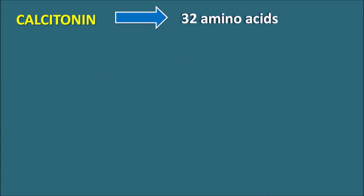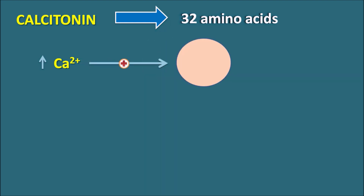So what is calcitonin? Calcitonin is a 32 amino acid polypeptide hormone. Normally, calcitonin is released when there are increased levels of calcium within the plasma. So when the plasma concentration of calcium is raised, it can stimulate the C cells within the thyroid follicles. These C cells release the mediator calcitonin, which can control the calcium levels within the plasma.